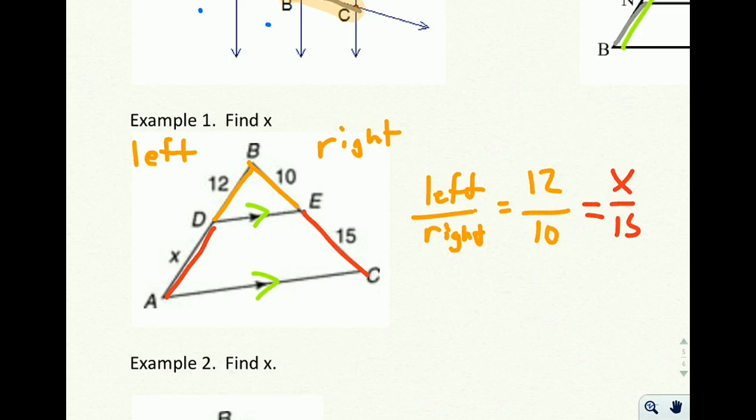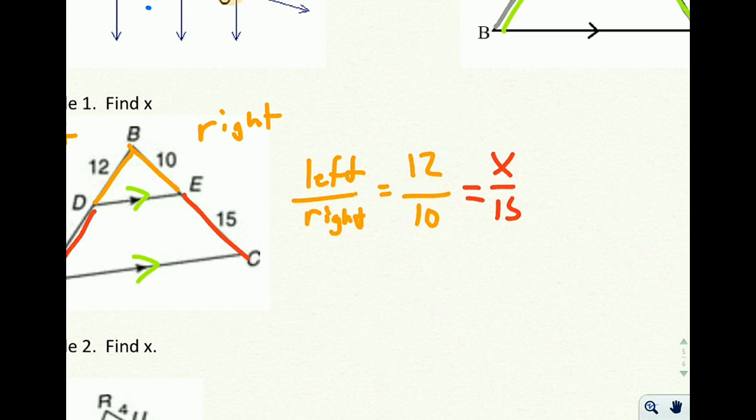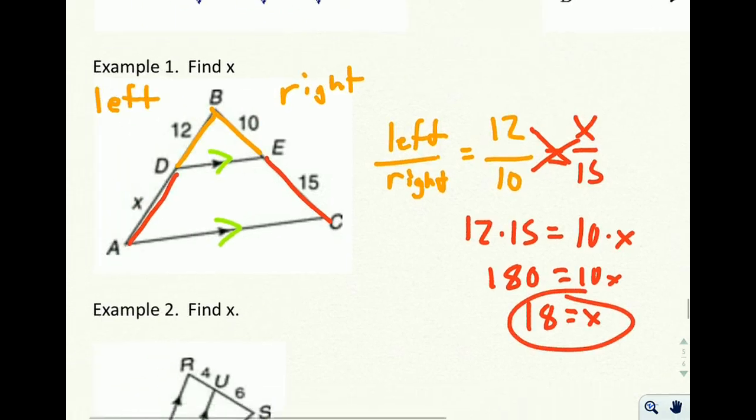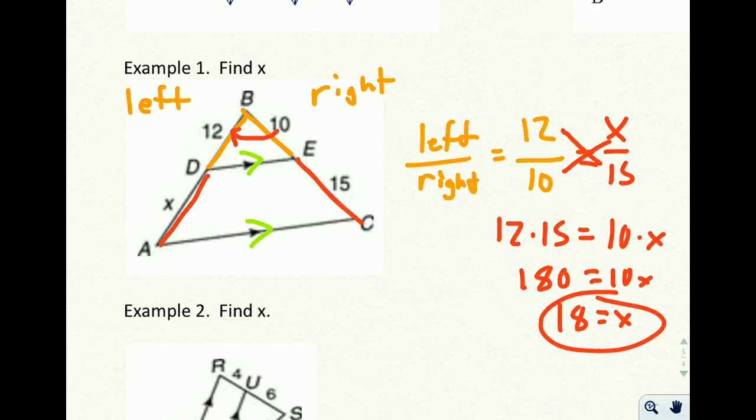Now when I have that, the way I solve any proportion, cross, multiply, and divide. Take my 12 times my 15 is equal to the 10 times the x. And 12 times 15 is 180, equals 10x. And then I divide both sides by 10 to get x equals 18. To make sure this makes sense, I get a little bit bigger as I go from right to left. 15 to x gets a little bit bigger, becomes 18. So x equals 18 seems reasonable.